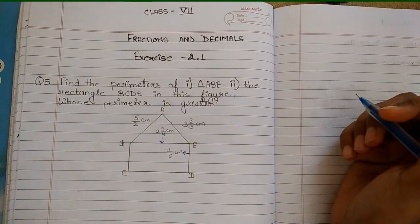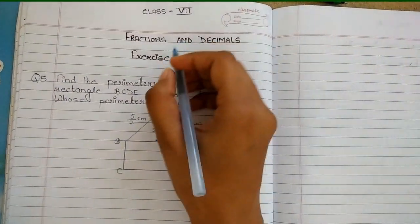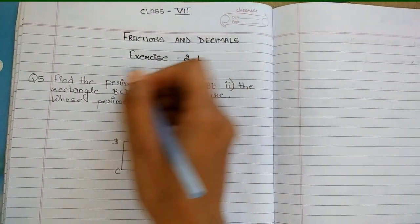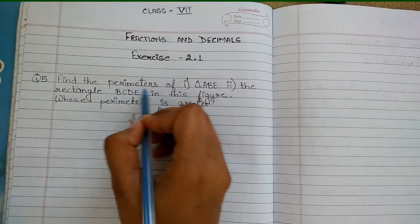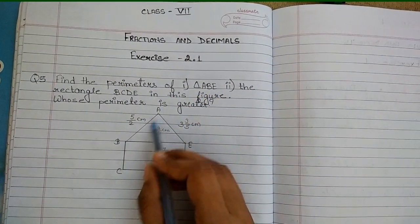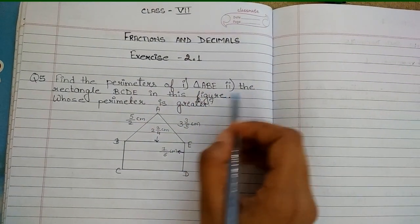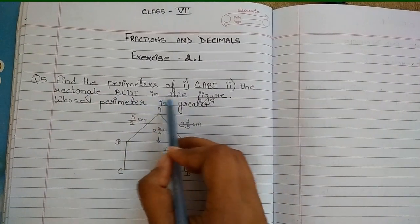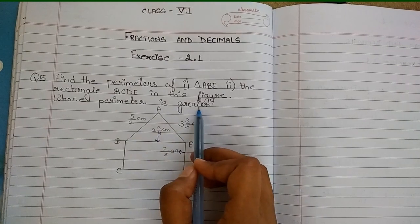Hello and welcome to my channel. Today we are going to study fractions and decimals, Exercise 2.1, Question number 5. Find the perimeter of triangle ABE, and second, the rectangle BCDE. In this figure, whose perimeter is greater?